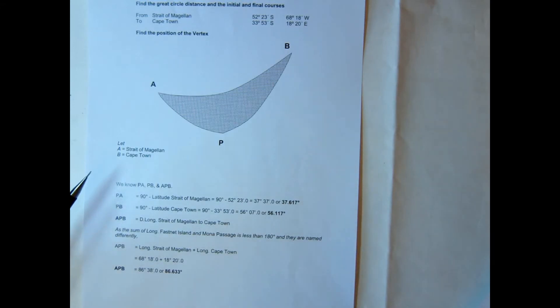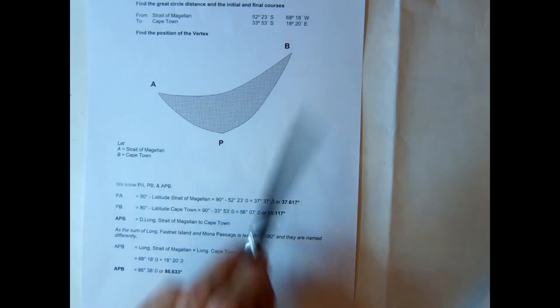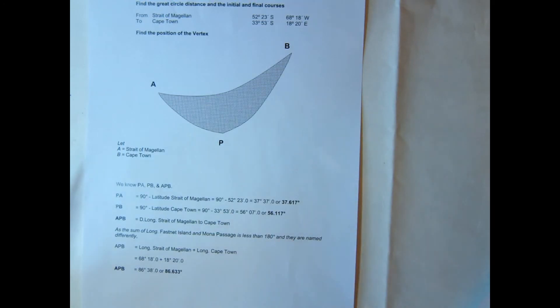Now if we're going to use the formulas to calculate the courses, then the first value we need to ascertain is the distance AB. So what we do is get our values for PA, PB, and P.